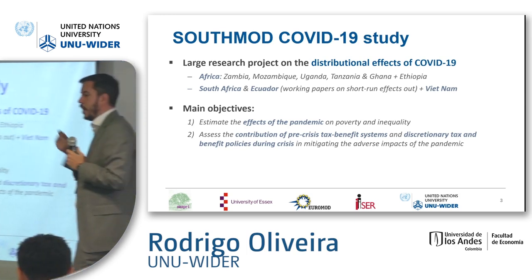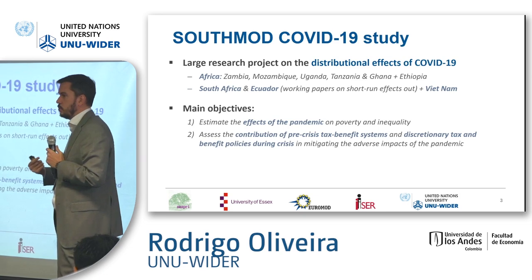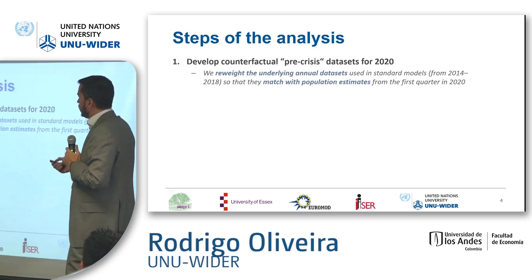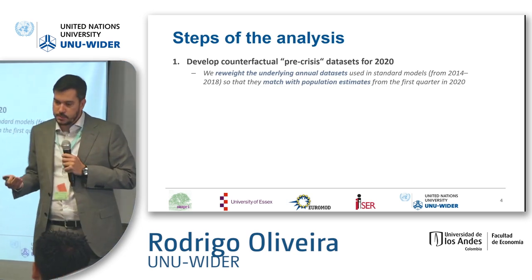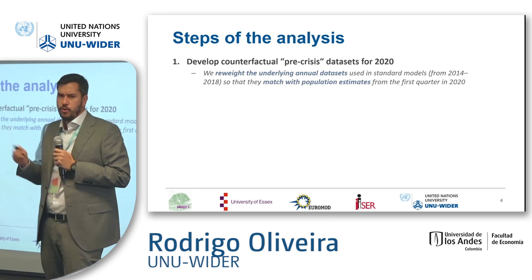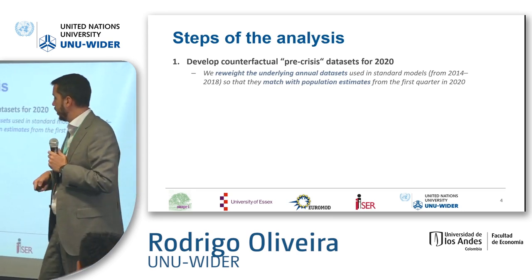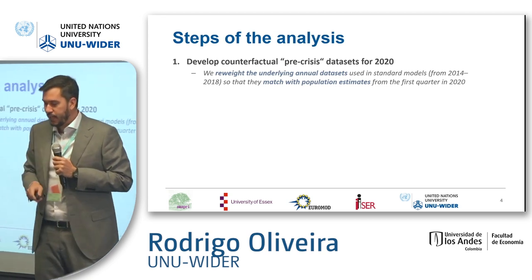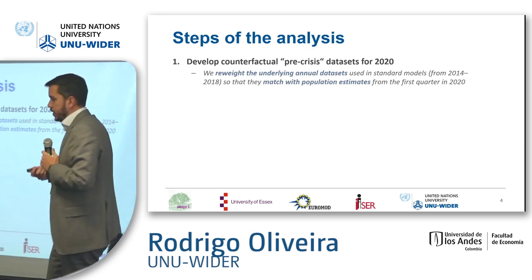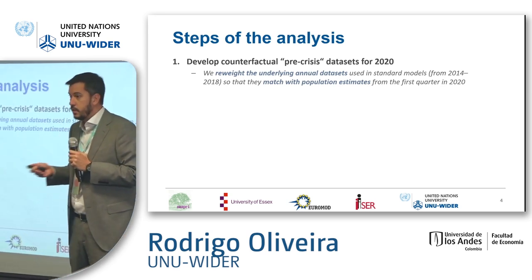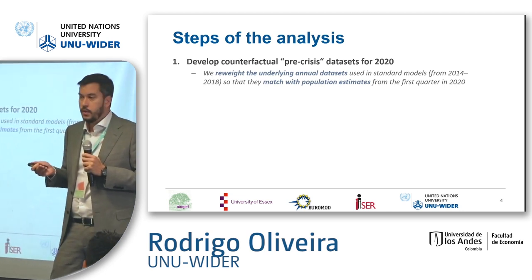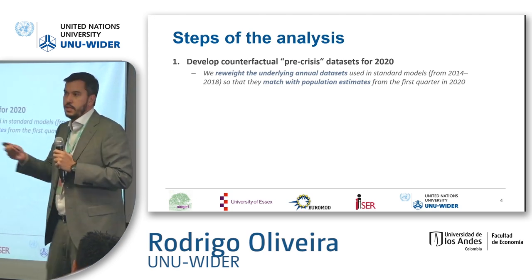This is one example of how important having national teams as partners is in this project. We are also writing a literature review about the role of taxation and social protection during crises in developing countries, and one key finding is that there is very scarce evidence — only a few papers deal with this issue — and the main problem is the lack of up-to-date data.